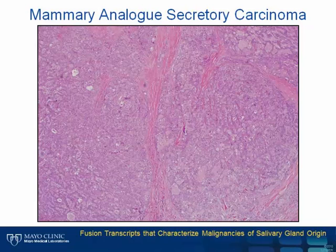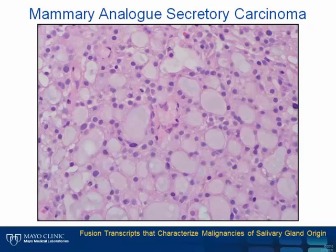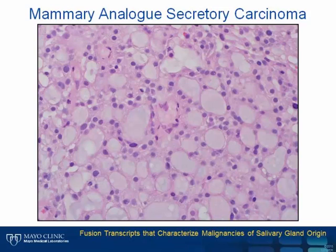Mammary analog secretory carcinoma of salivary glands is typically a well-circumscribed lobulated mass dissected by bands of fibrosis. Tumor cells coalesce within an intricate network of cystic and microcystic spaces, which characteristically contain homogenous or vacuolated pink material. Tumor cell nuclei are vesicular with finely granular chromatin and occasional centrally located nucleoli. It exhibits a relatively consistent immunophenotype with strong and diffuse expression for S100 and mammoglobin; however, these features are not specific to this entity.